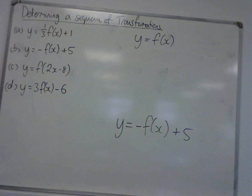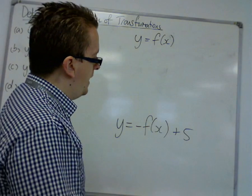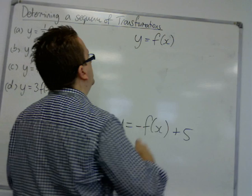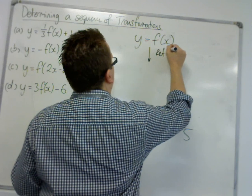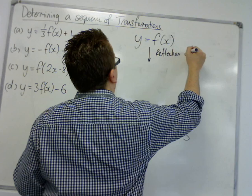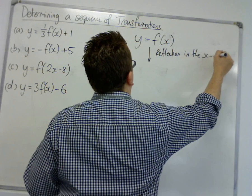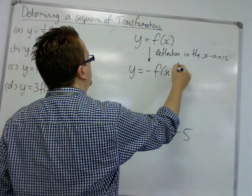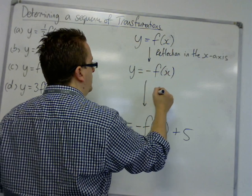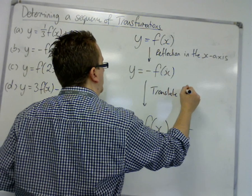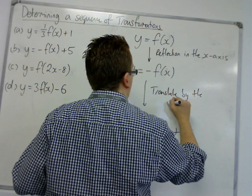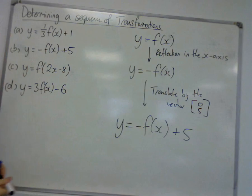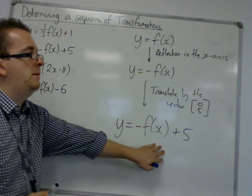So, which one could have come first? Well, let's see if we do a reflection first. So, reflection in the x-axis. So, we get y is equal to minus f of x. And then, I translate by the vector 0, 5. And I arrive at my answer.